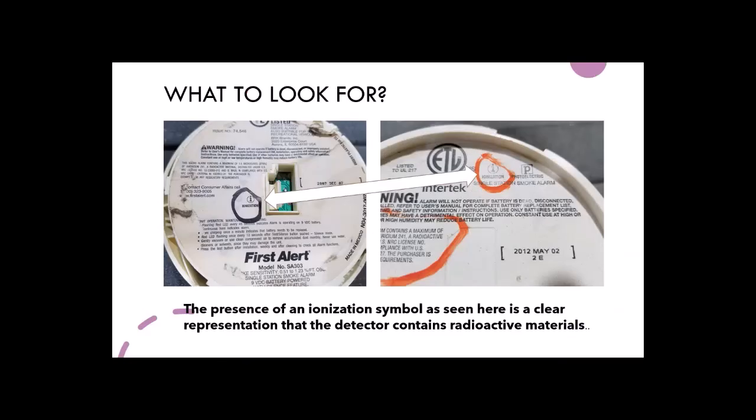Here we have photos of two different types of units. On the left photo we have an ionization unit — circled in black right in the center of the left-hand photo. You see the letter I in a circle and the word ionization beneath it. This is on the back side of the unit, on the side where the manufacturer's label goes against the ceiling when you install it.